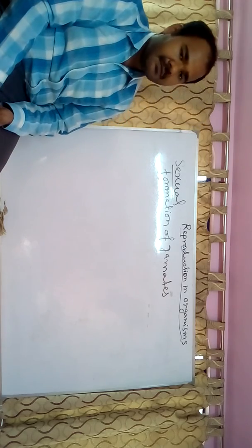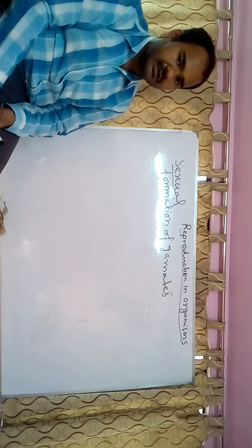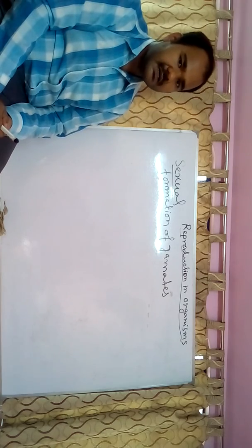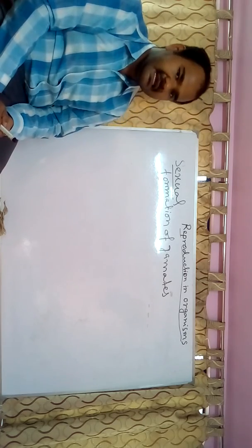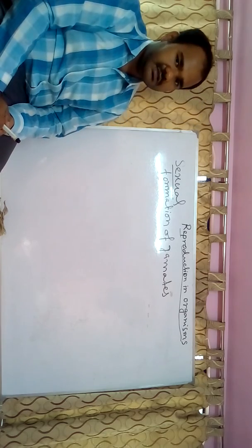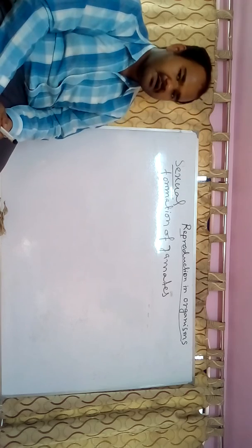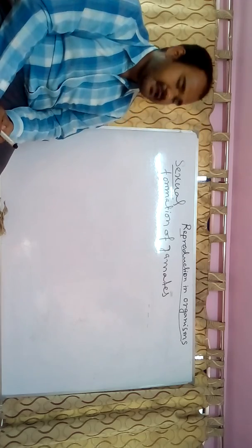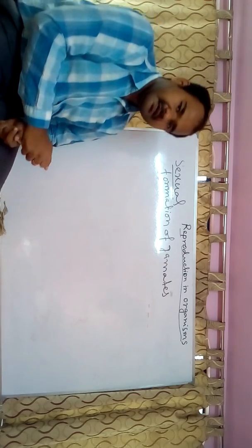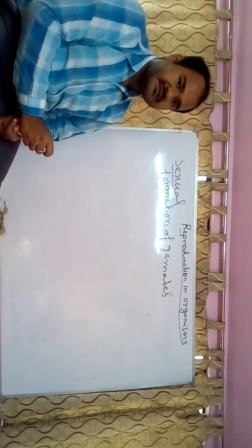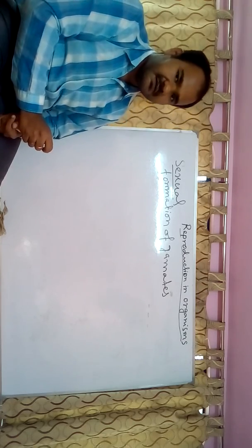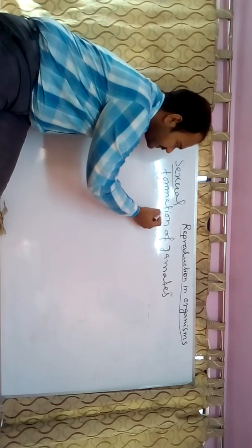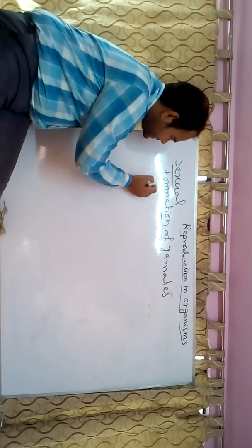Gametes are produced in different organisms in different ways. Some organisms are homothallic or heterothallic, monoecious or dioecious. Monoecious means the organism carries both male and female sex organs. Dioecious means the organism is either male or female — it contains either a male part or a female part. In human beings, the male reproductive cell is the sperm and the female reproductive cell is the ovum.